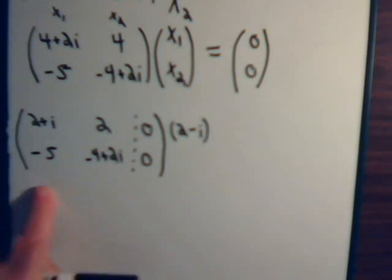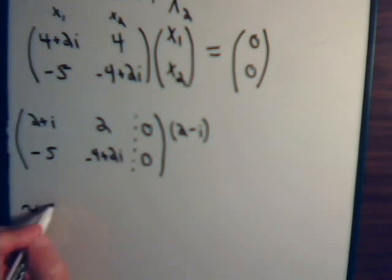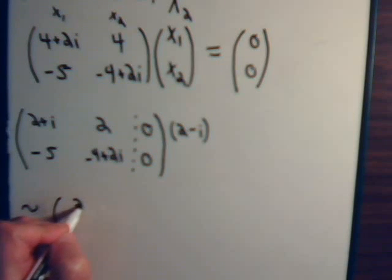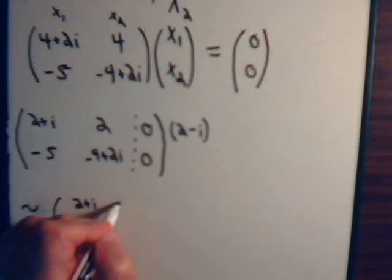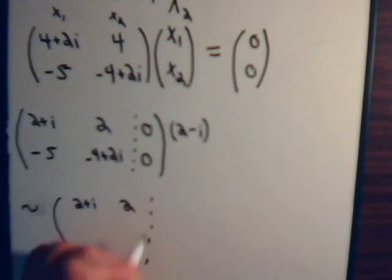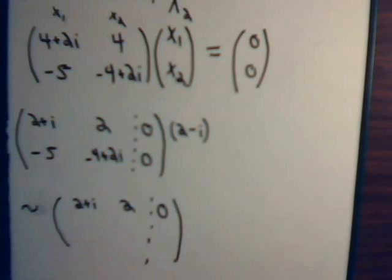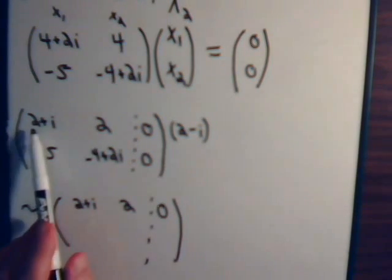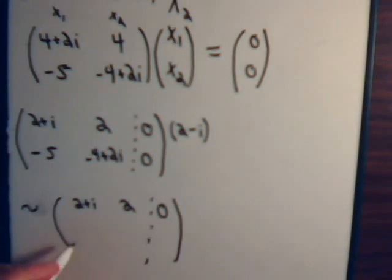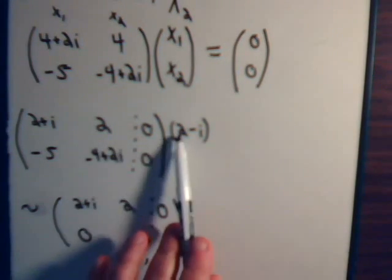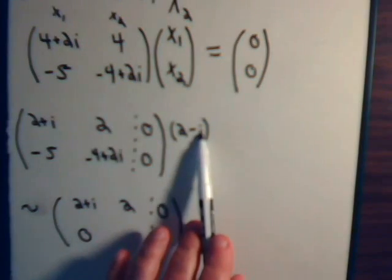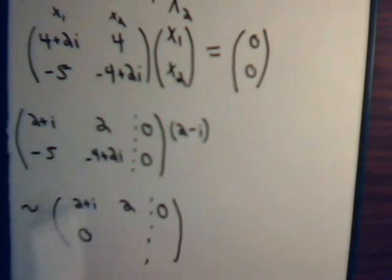So, this will be row equivalent to 2 plus i, 2. 2 plus i times 2 minus i is plus 5, add it to that, that's 0. And this will be plus 4 minus 2i, add it to there. This is also 0.